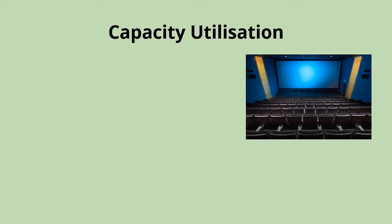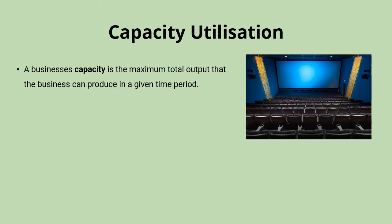One thing people can get confused about quite commonly is the difference between a business's capacity and their capacity utilisation. A business's capacity is their maximum total output that they can produce in a given time period. So if you've got a cinema with 500 seats, the capacity of that cinema is 500 seats. If you've got a car manufacturer that can produce 300 cars in a day, their capacity is 300 cars per day — the maximum they can produce in a given period.